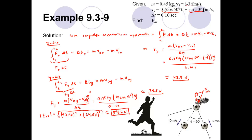To find the angle — I'll call it beta — we have the adjacent side and the opposite side, so we use the inverse tangent. The opposite side is the x component, 42.4 newtons, and the adjacent side is the y component, 34.5 newtons. Punching that into the calculator, the angle beta is approximately 50.9 degrees.